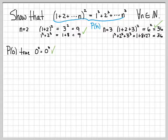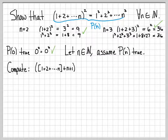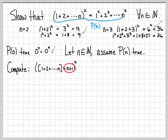The next step in an induction proof is to let n be a natural number and assume that P(n) is true. Our goal is then to derive that P(n+1) is true. To do that, we start by computing P(n+1). We start with the left side: 1 plus 2 plus dot dot dot up to n plus 1, the entire quantity squared. So instead of adding up to n, we've gone one more, adding up to n plus 1 and squaring it. Our goal is to manipulate this into 1 cubed plus 2 cubed plus dot dot dot plus (n+1) cubed, establishing P(n+1).